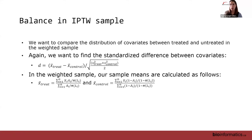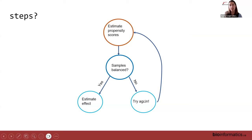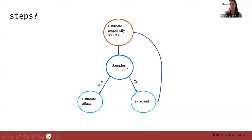We'll cover R packages that do this for us. For the steps of your analysis — essentially another decision tree — first estimate propensity scores, then check whether samples are balanced across all covariates between treatment and control groups. If yes, estimate the treatment effect. If no, try again: transform variables, add interactions, switch from logistic regression to random forest, and keep iterating until you achieve adequate balance.